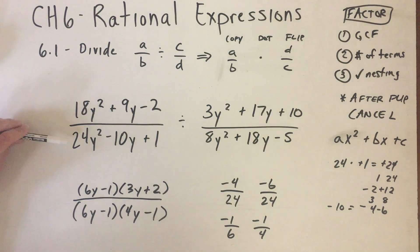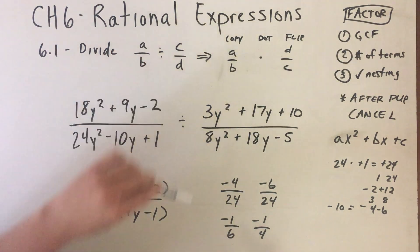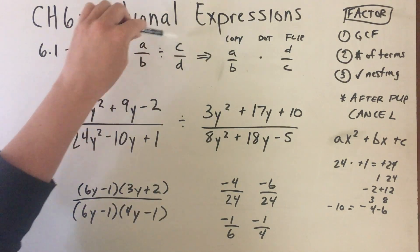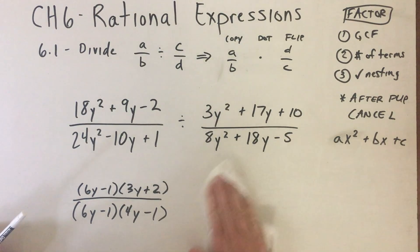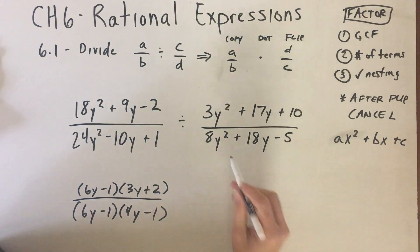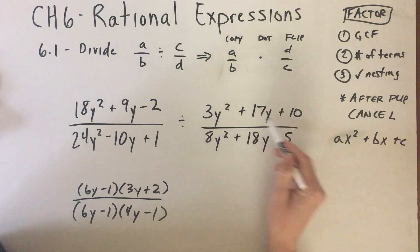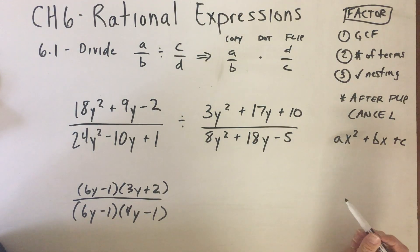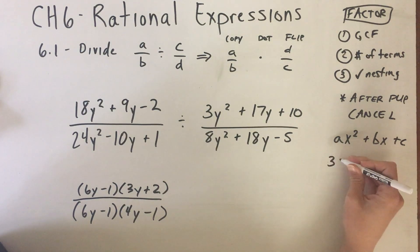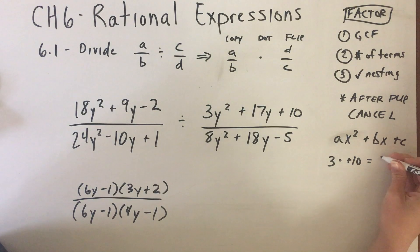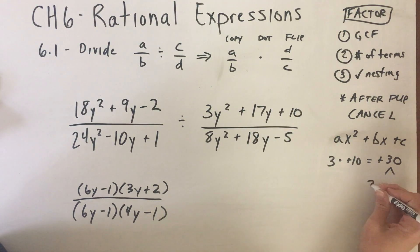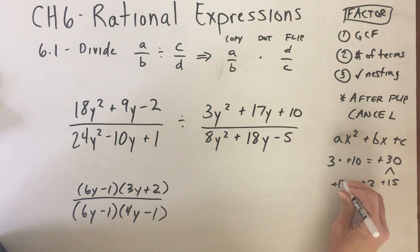Now we have factored the bottom polynomial. Next I'm going to factor the top polynomial of the divisor, but when I factor it, I'm going to put the factors on the bottom — because whatever is C when you're dividing, you put it on the bottom. Looking at 3y² + 17y + 10: the coefficients 3, 17, and 10 have no GCF. It's a three-term polynomial, so I use synthetic factoring again: 3 times positive 10 is positive 30. I'm looking for factors of 30 that sum to positive 17.